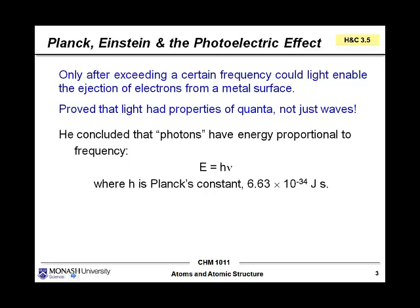So you had to have a certain amount of energy. You had to get over a certain threshold before you could eject an electron. And so he concluded that photons have an energy proportional to frequency. And the formula you can use is E equals h nu, where h is Planck's constant and has the value 6.63 times 10 to the negative 34 joules per second.